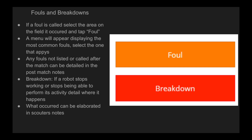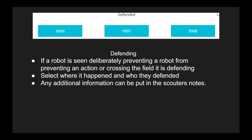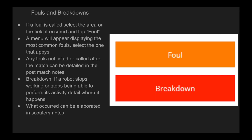If a foul is called on an area, select the area on the field where it occurred and tap foul. A menu will appear displaying the most common fouls — select the one that applies. Any fouls not listed or called after the match can be detailed in post-match scouter's notes.